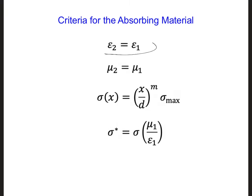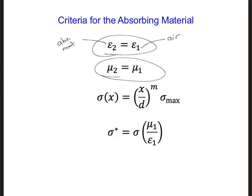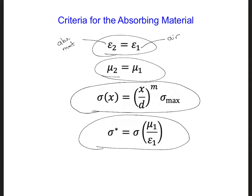First, we need epsilon 2 equal to epsilon 1. Epsilon 1, or material 1, is air, and epsilon 2 is in the absorbing material. We need mu 2 equal to mu 1, and we defined a polynomial grading that we can use to ramp up the conductivity slowly from 0 at the interface of the absorbing layer. Finally, we came up with a relationship where sigma star, the magnetic loss, relates to sigma, the electric loss, using mu and epsilon.